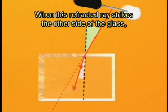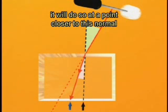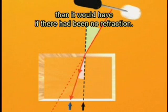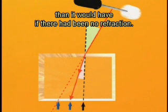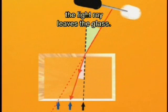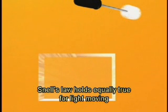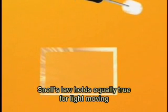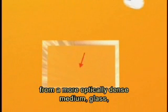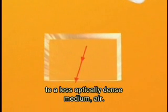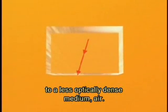When this refracted ray strikes the other side of the glass, it will do so at a point closer to this normal than it would have if there had been no refraction. What happens now is the light ray leaves the glass. Snell's Law holds equally true for light moving from a more optically dense medium, glass, to a less optically dense medium, air.